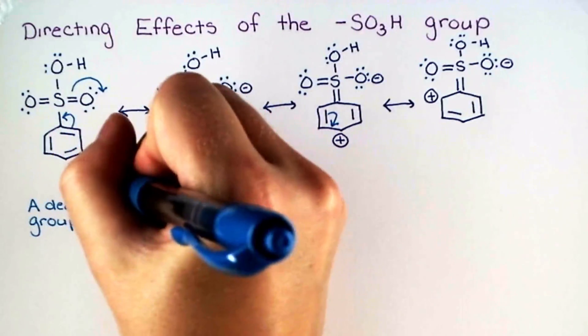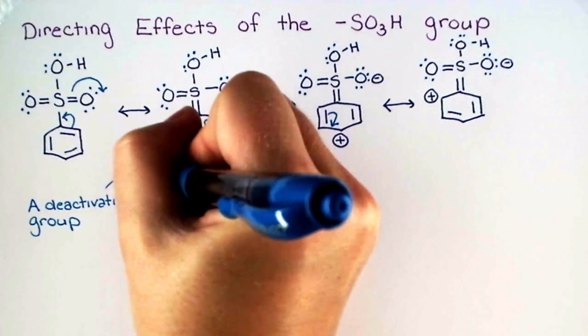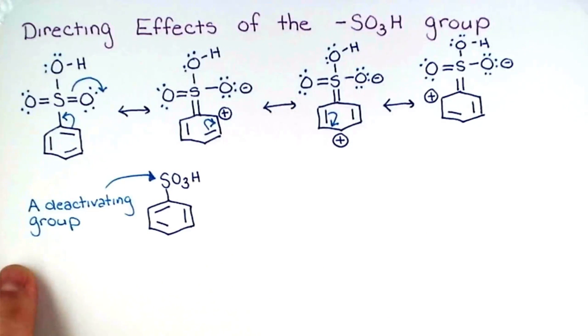Thus the sulfonic acid group is a deactivating group. It pulls the electrons out of the ring that benzene needs to undergo further electrophilic aromatic substitution reactions. The electrons within the ring are less available to attack electrophiles.